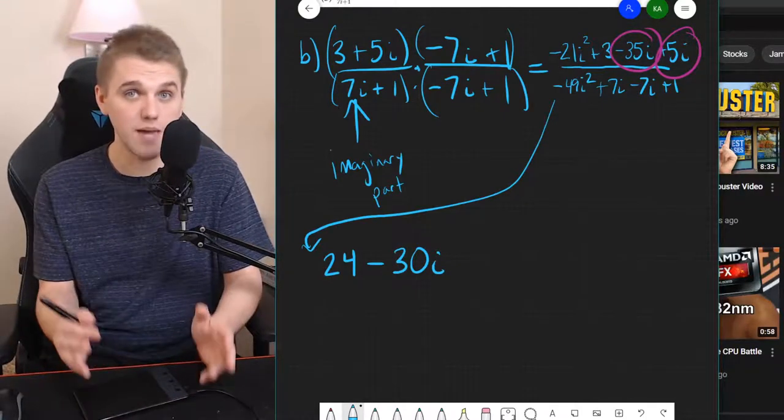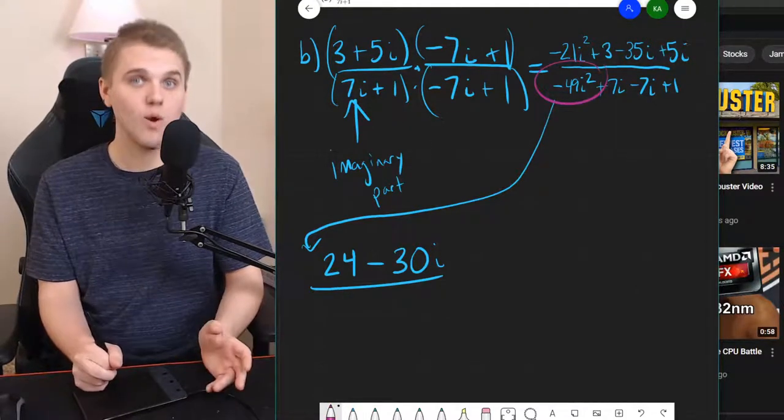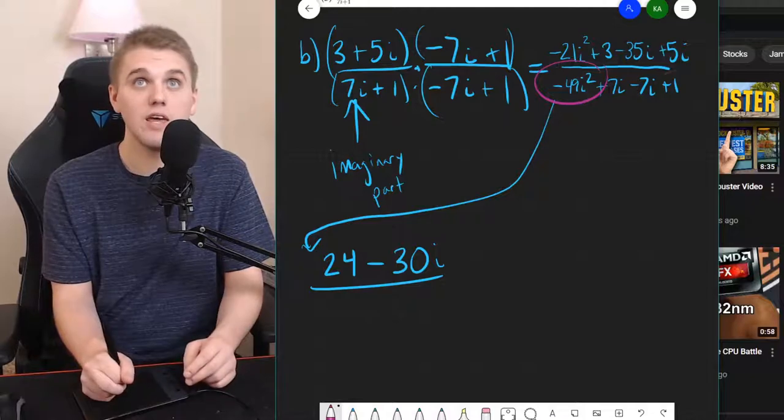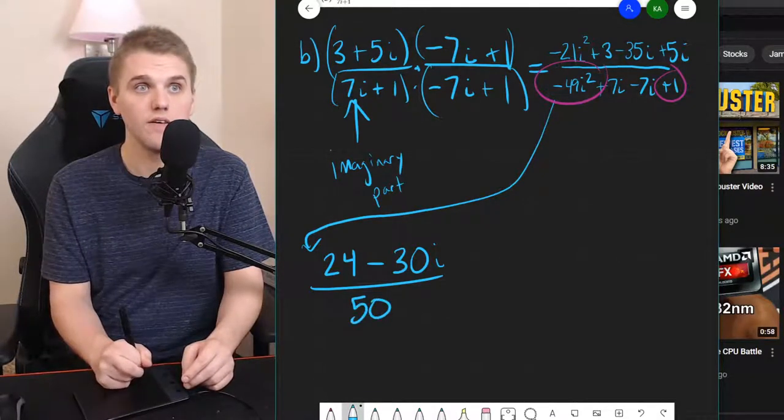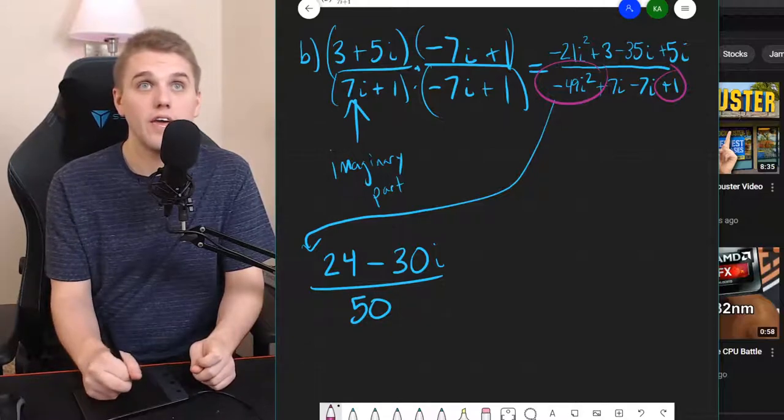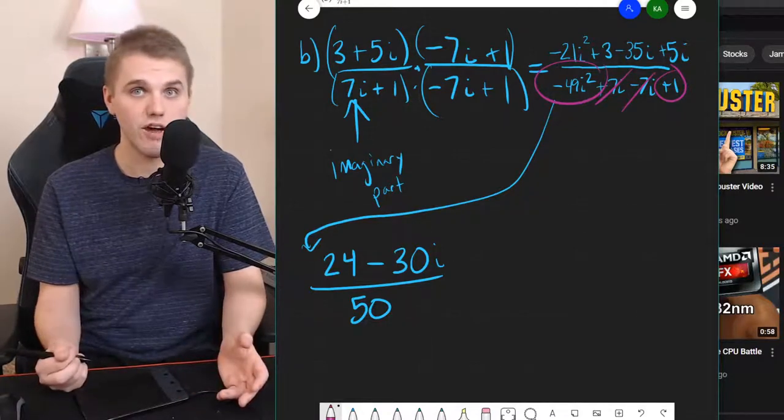And I'm going to do the same thing with the denominator. So negative 49i squared is just positive 49, plus 1 is 50. And then 7i minus 7i, they just cancel each other out.